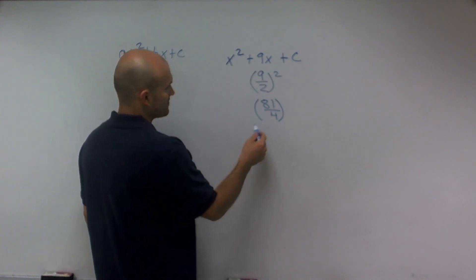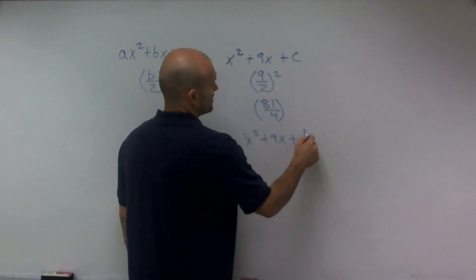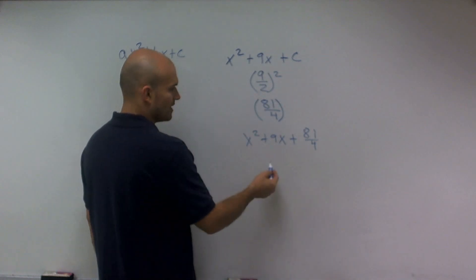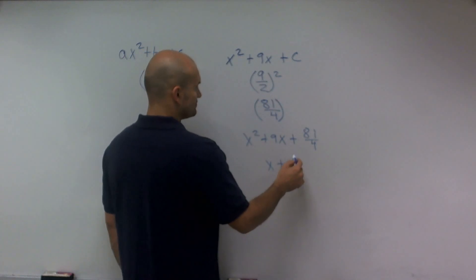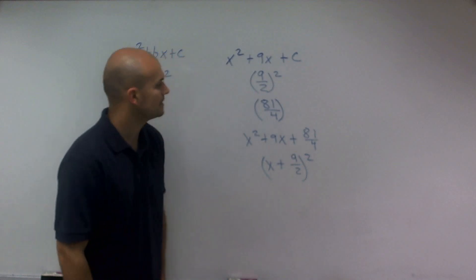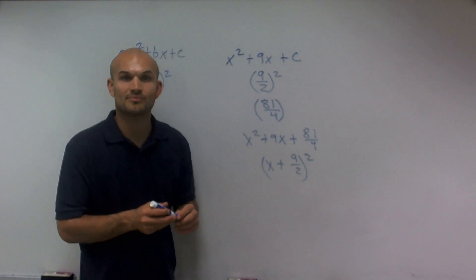which in this case, you now have x squared plus 9x plus 81 over 4. You can now rewrite this as a perfect square binomial as x plus 9 halves squared. And there you go. That's how you find the c for completing the square. Thanks.